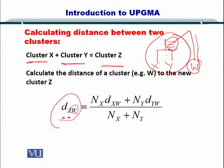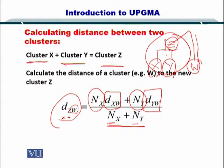In this case, let's consider W to be a sequence. So now you want to compute the distance between Z and W. The number of sequences in X is 1, number of sequences in Y is 1, and the distance between X and W and the distance between Y and W, using the pairwise sequence alignment distance matrix, and dividing them by the sum of the number of sequences within X and Y. This will help you compute the distance between two sequences or two clusters or one cluster and one sequence.